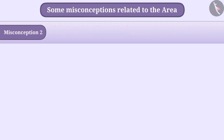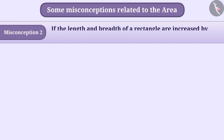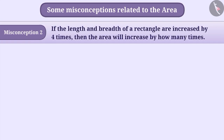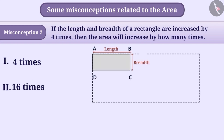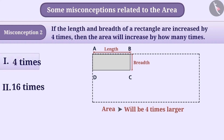Misconception 2: If the length and breadth of a rectangle are increased by 4 times, then the area will increase by how many times? Some students believe that since the length and breadth have been increased by 4 times, the area will also be 4 times larger. With this understanding, students select option 1, which is the wrong answer.